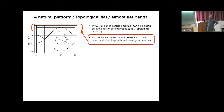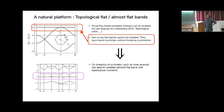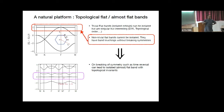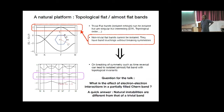In non-trivial flat bands there is a touching point where a dispersing band touches the flat band, and this touching cannot be separated without breaking further symmetries. Once you break a symmetry — such as time-reversal symmetry — you get a flat or almost-flat band with non-trivial band topology. The Chern numbers characterize these flat or almost-flat bands. The question we want to address is: what is the effect of electron-electron interaction in such partially filled Chern bands?